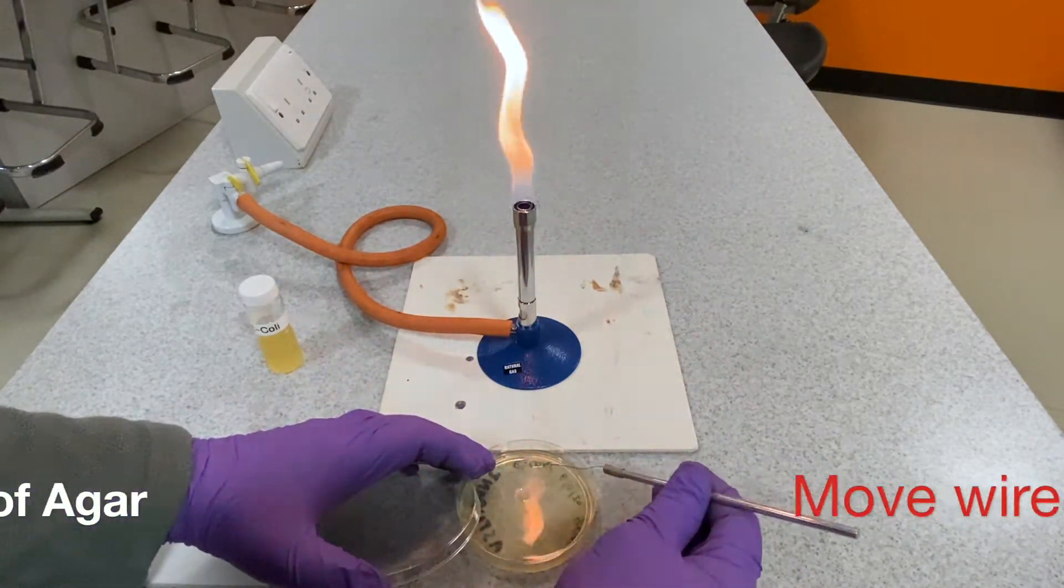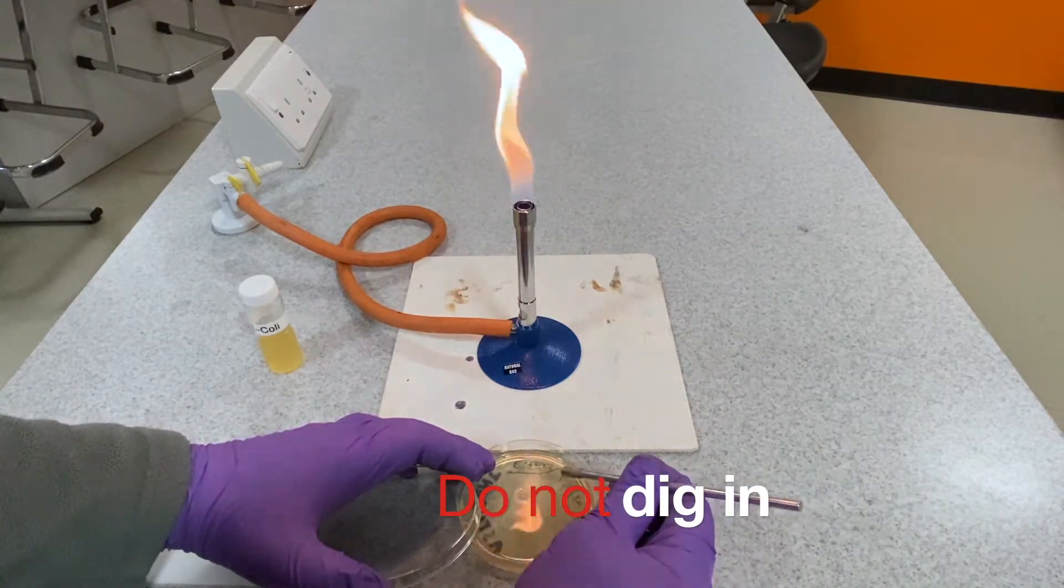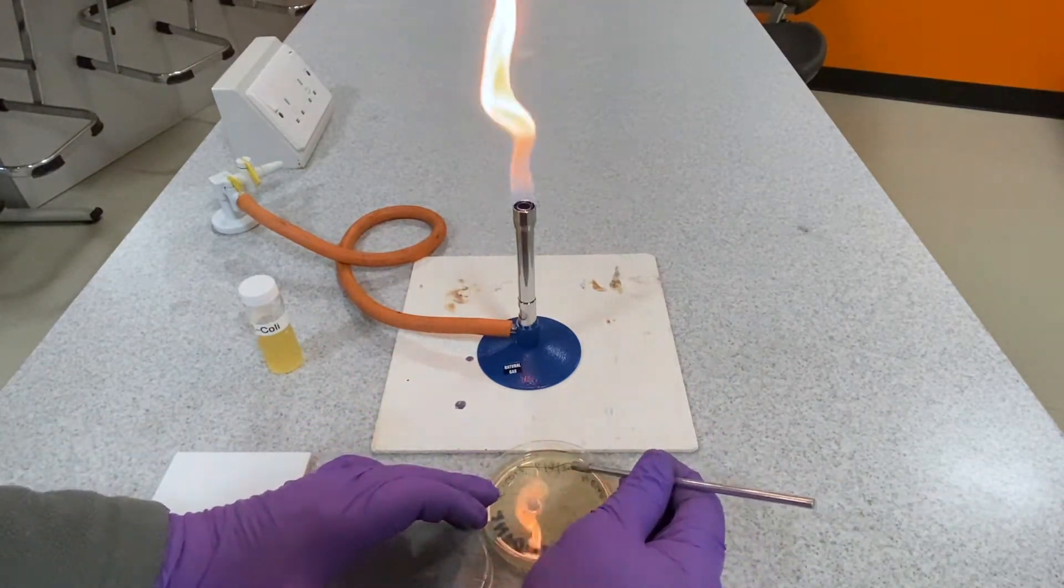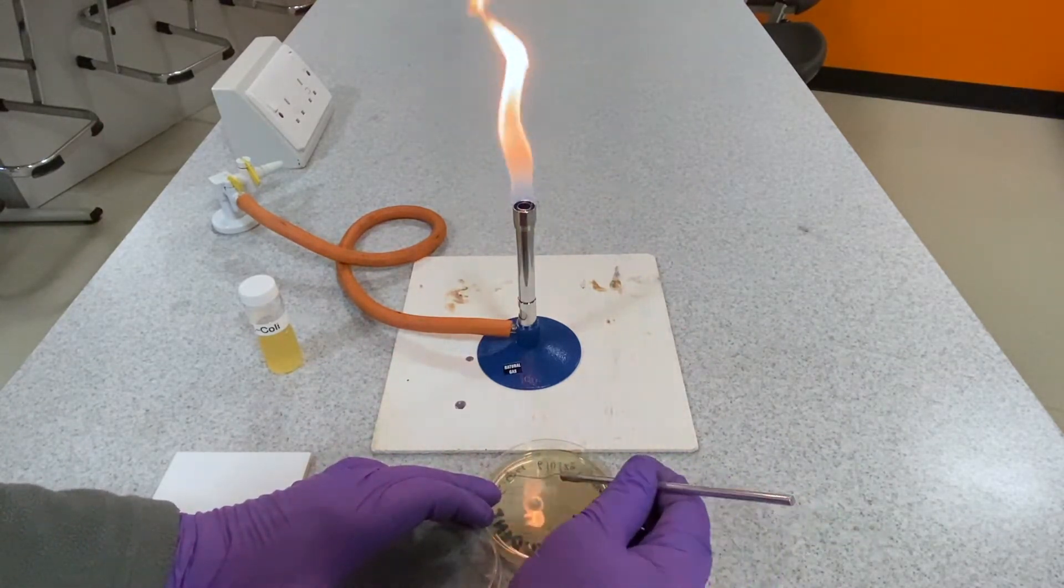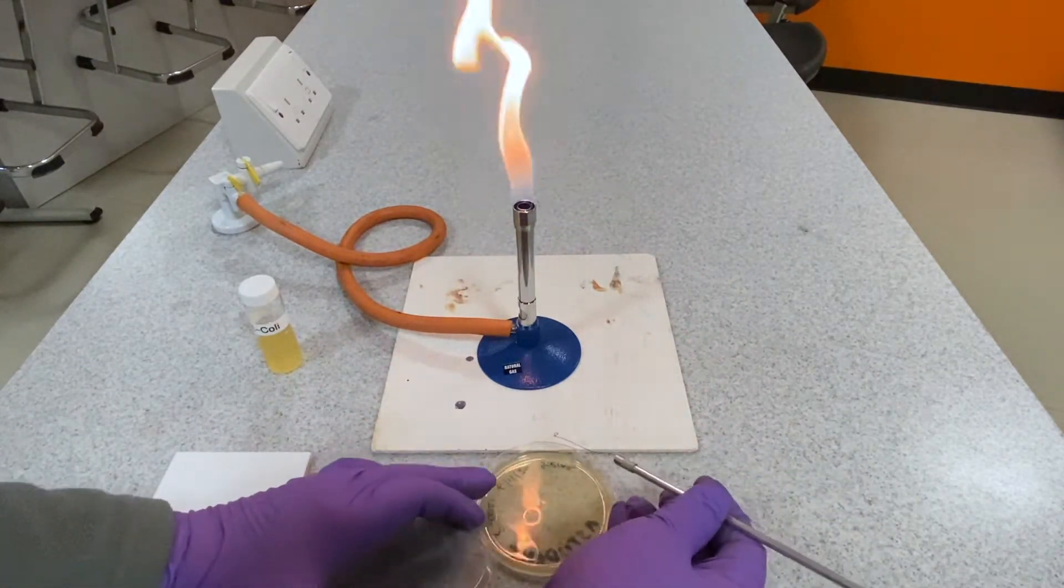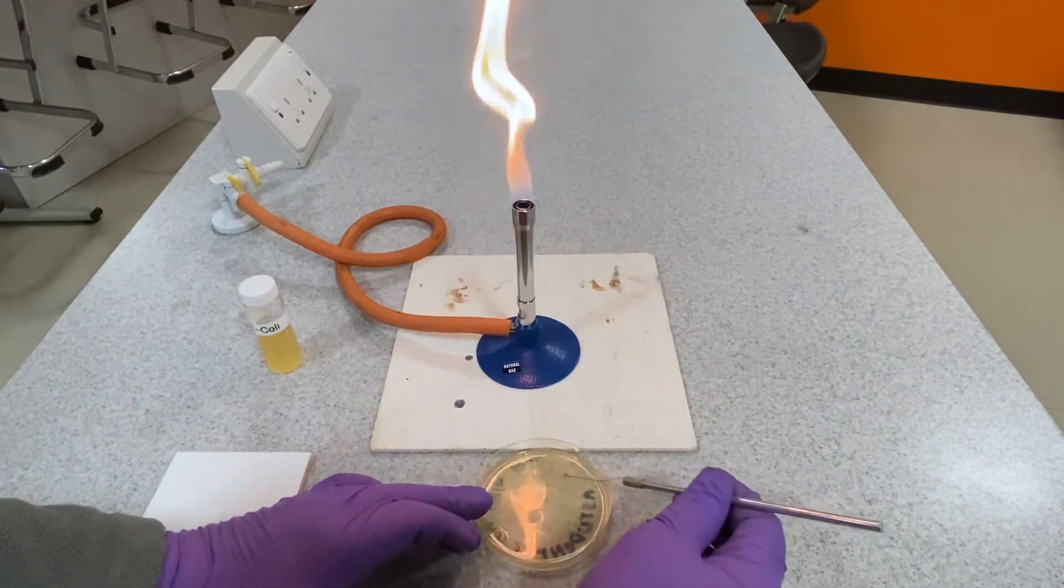Transfer the bacteria from the wire loop to the surface of the agar plate. Take care not to dig in below the surface of the agar as this may create anaerobic conditions and allow the growth of harmful bacteria.